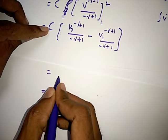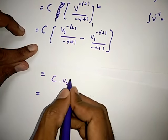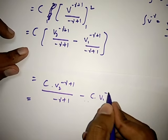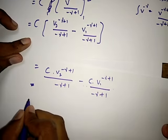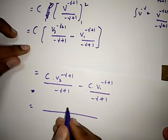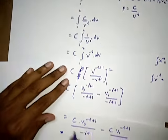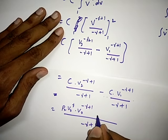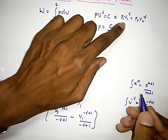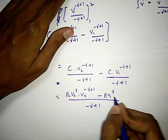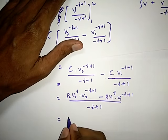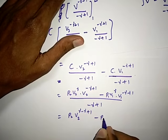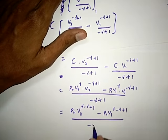So if I multiply C here, this can be written as C into V2 to the power of minus gamma plus 1 by minus gamma plus 1, minus C into V1 to the power of minus gamma plus 1, with common denominator minus gamma plus 1. In the place of C I write P2 V2 to the power of gamma, and it is multiplied by V2 to the power of minus gamma plus 1. Minus, in the place of C I write P1 V1 to the power of gamma into V1 to the power of minus gamma plus 1. Because the bases are the same I can add the powers: V2 to the power of gamma minus gamma plus 1, minus P1 V1 to the power of gamma minus gamma plus 1, all divided by minus gamma plus 1.